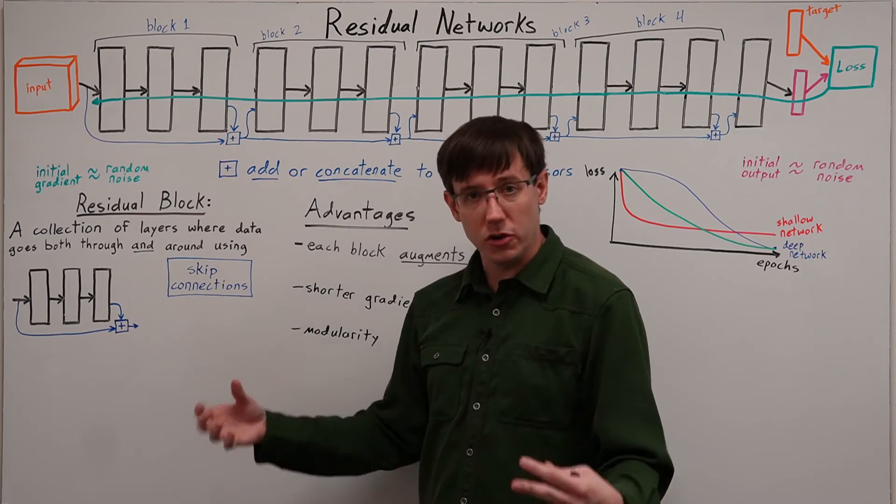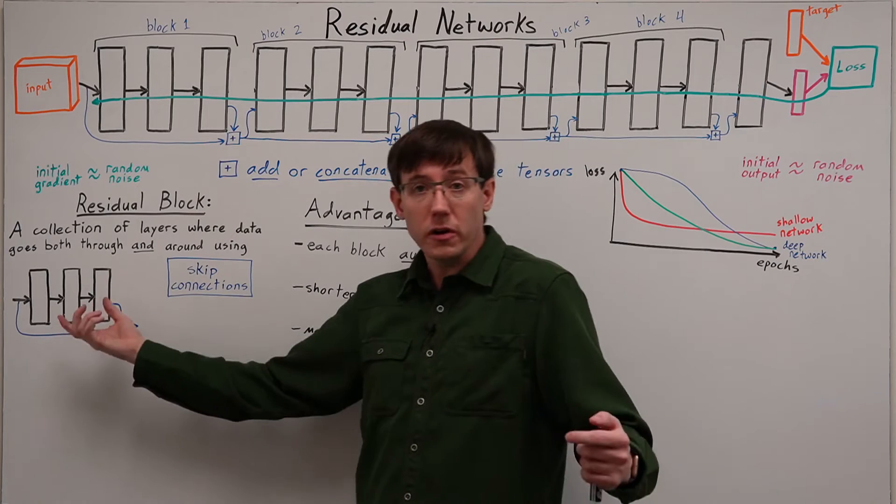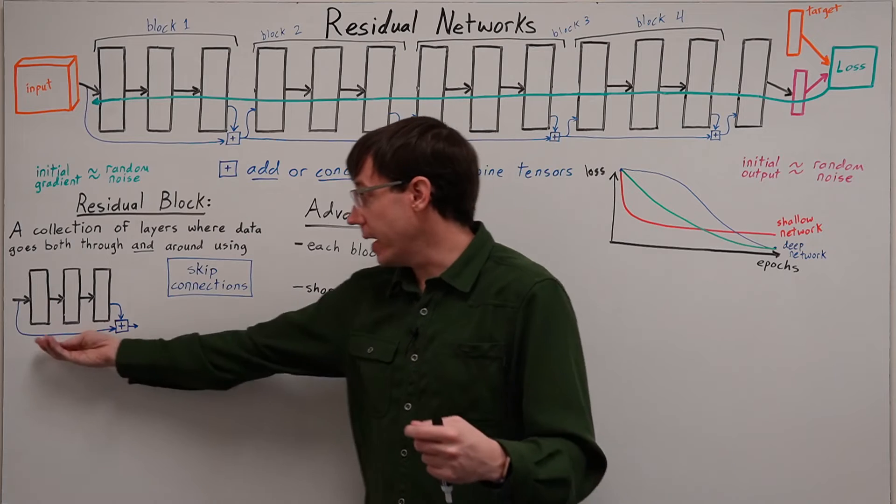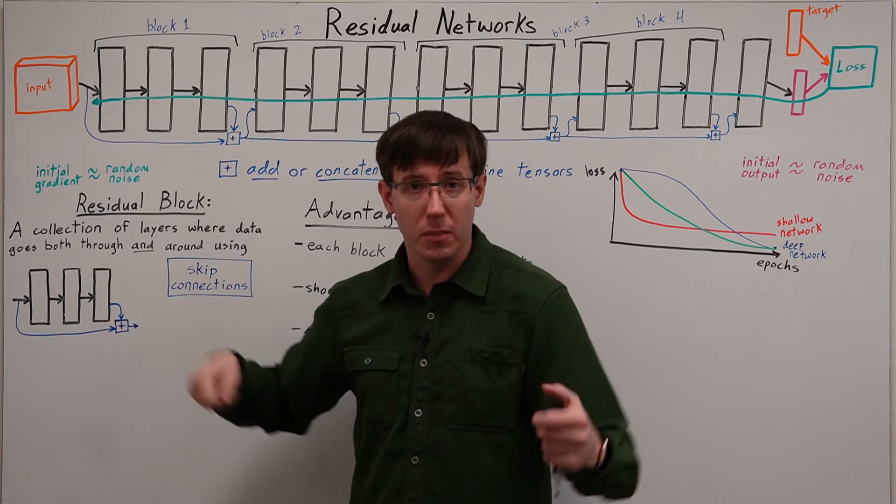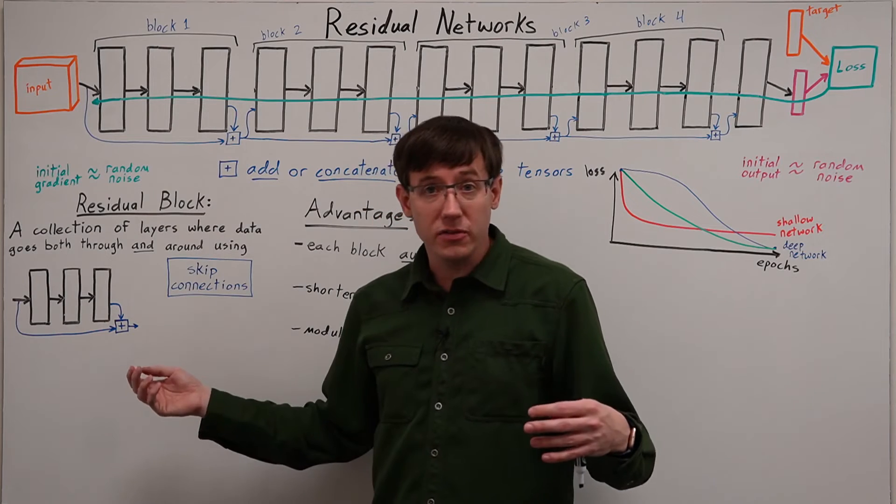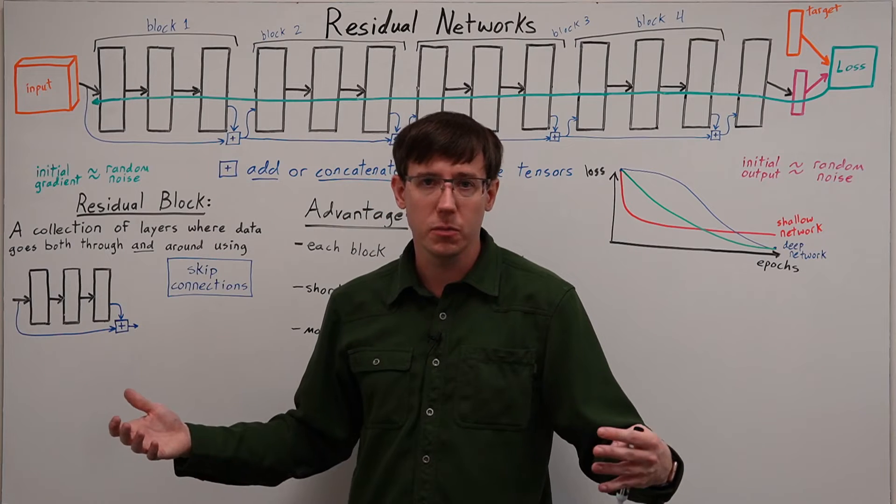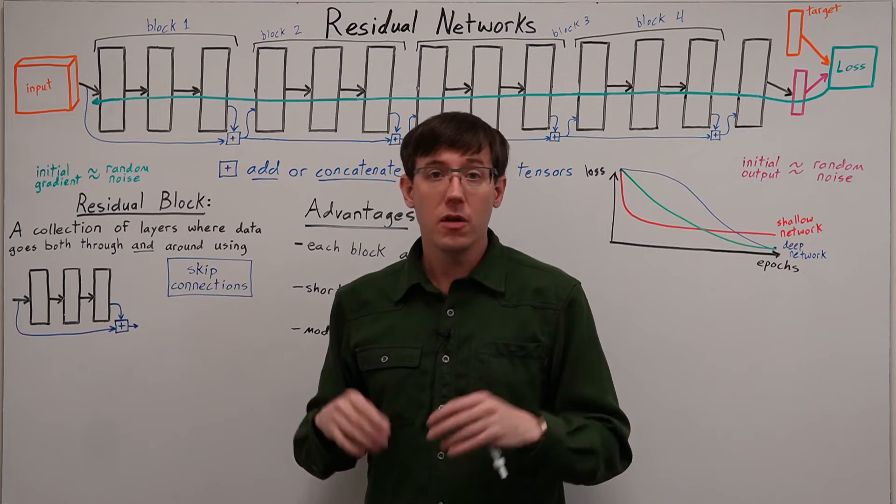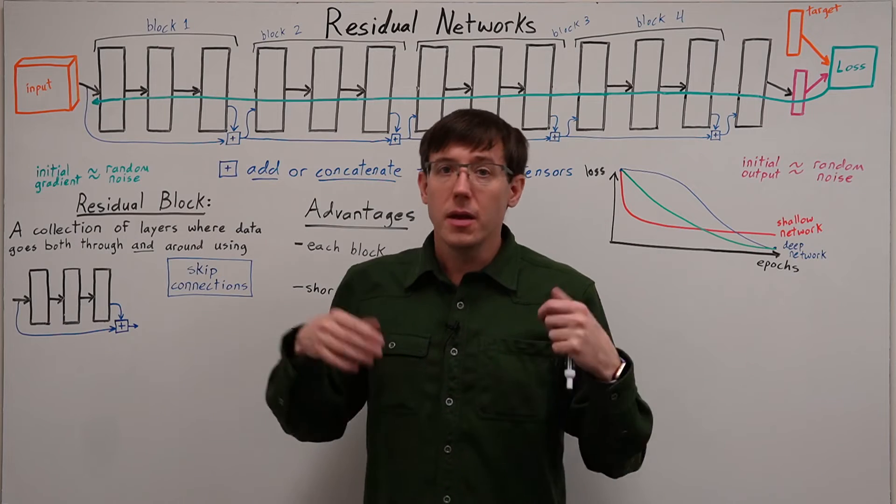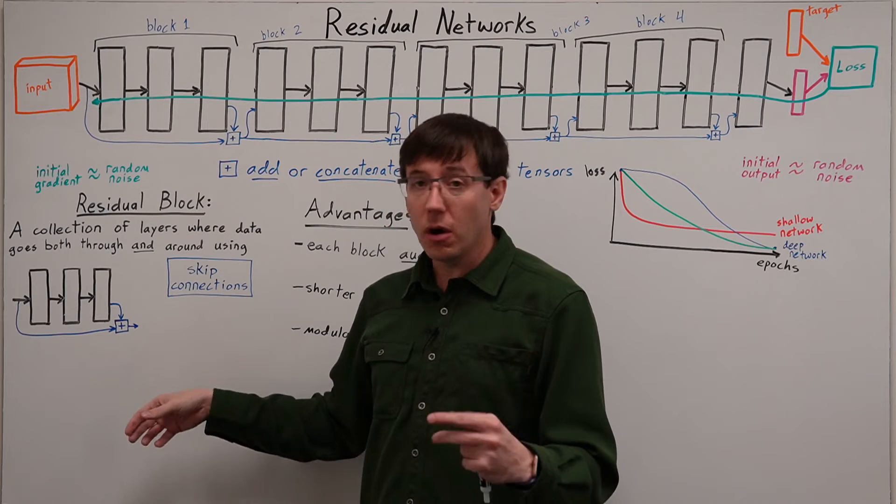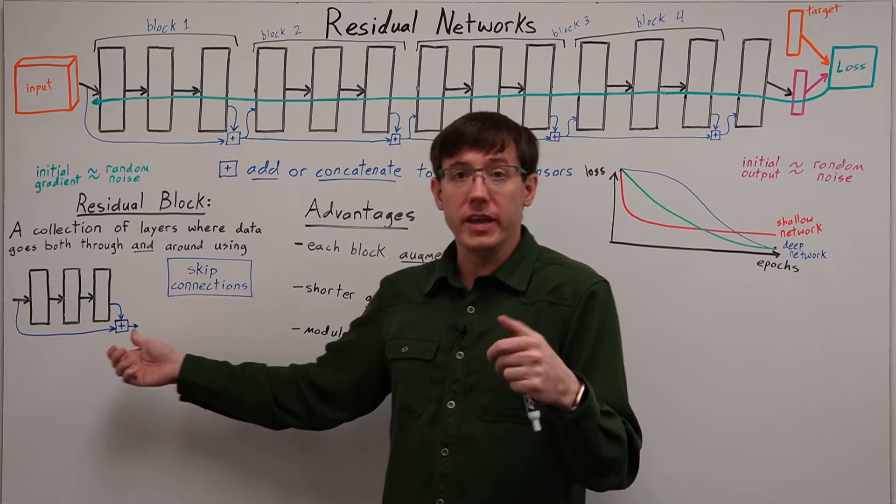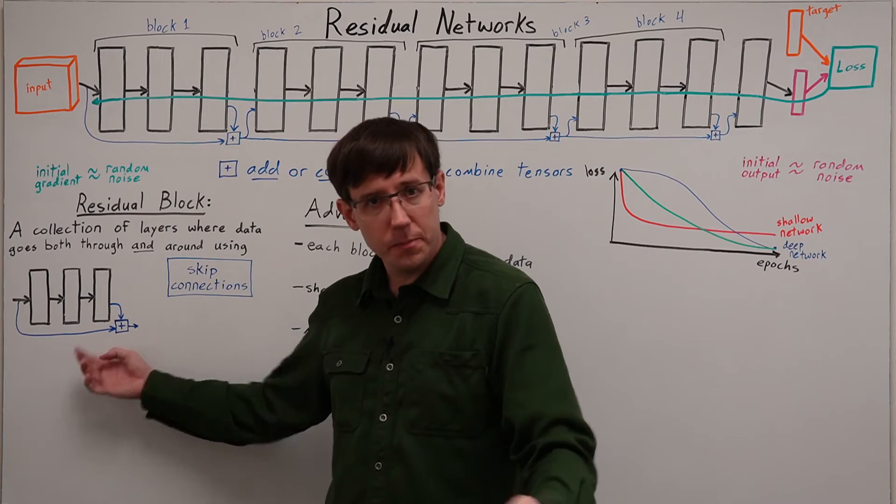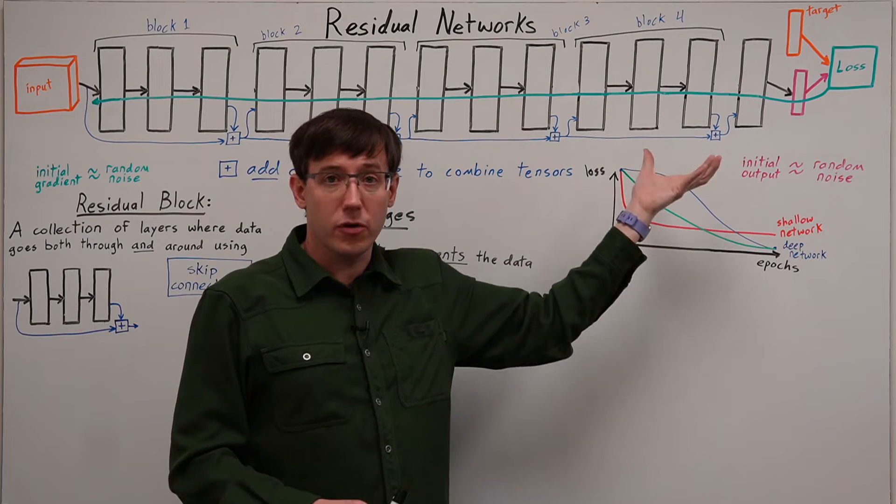And this sort of function tends to be much easier to learn because the block doesn't have to start by figuring out what information the input contains. Instead, the block starts by passing along all of the input and barely modifying it. If we're using concatenation, then the input is passed along unchanged in addition to whatever the block outputs. But even if we're using addition, when we initialize these layers with random weights, those weights tend to be small and centered around zero, meaning that what we add is initially close to zero, and so initially we will be passing along the information relatively unchanged. And so each block has a simpler task to learn, and each block has access to better information to learn from.